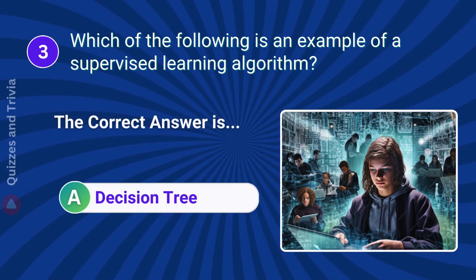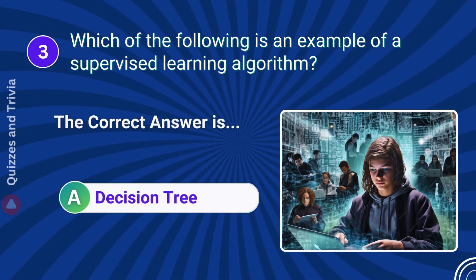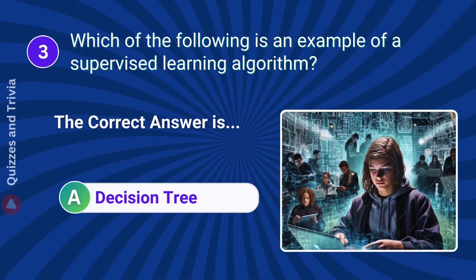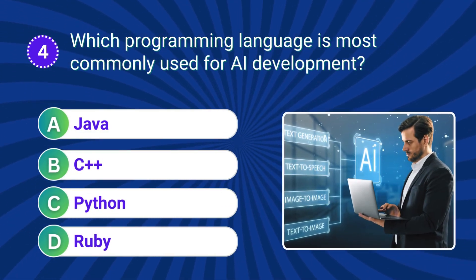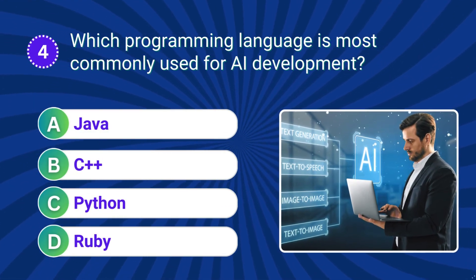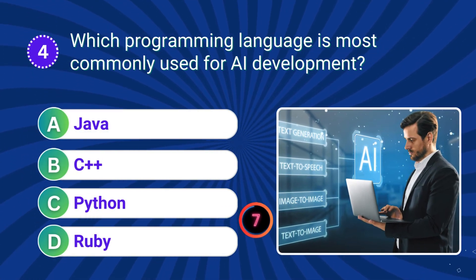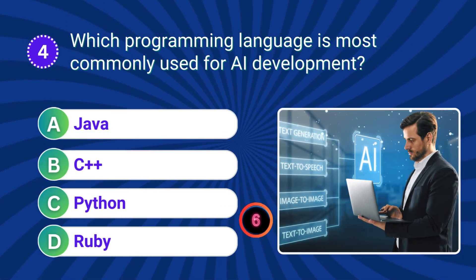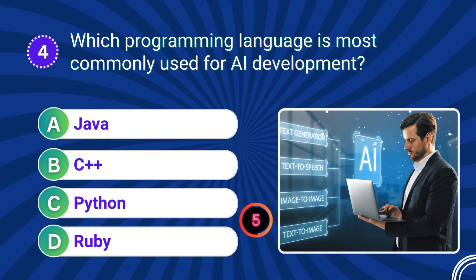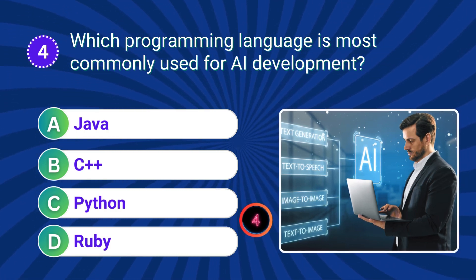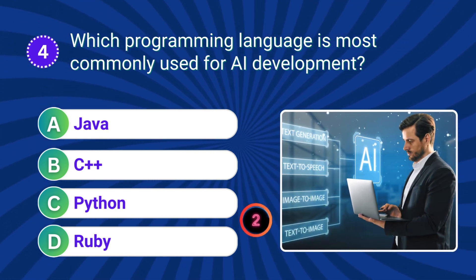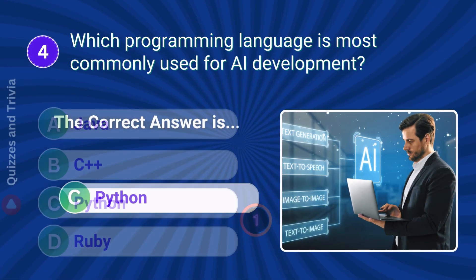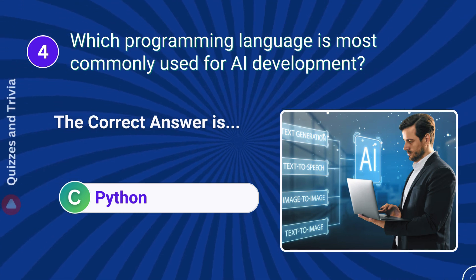Answer A: Decision tree. Which programming language is most commonly used for AI development? Answer C: Python.